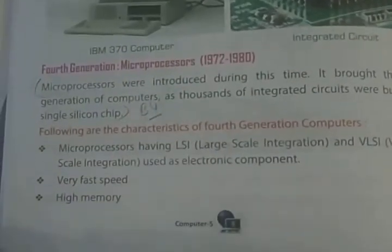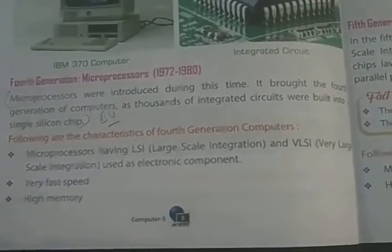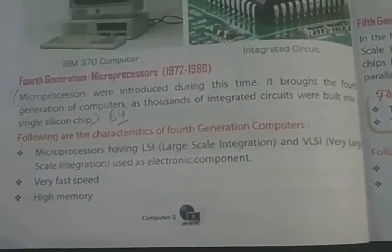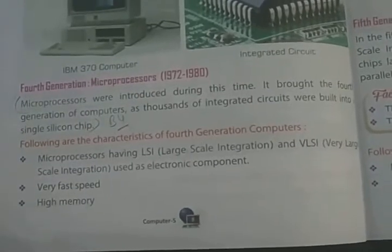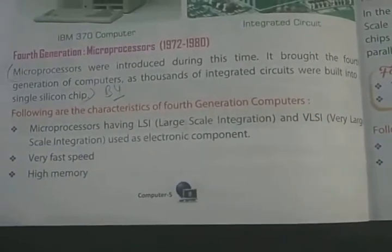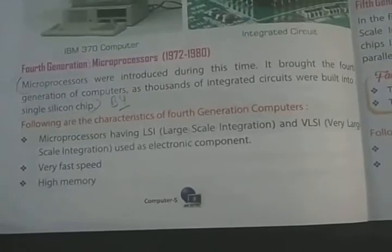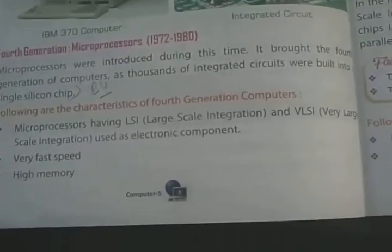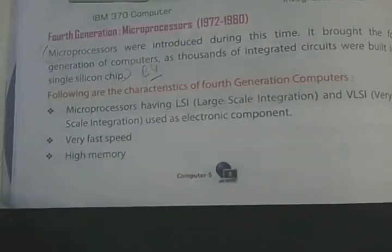Next come fourth generation computers, which used microprocessors, from 1972 to 1980. Microprocessors were introduced during this time, bringing the fourth generation of computers, as thousands of integrated circuits were built into a single silicon chip. Characteristics include microprocessors with LSI (Large Scale Integration) and VLSI (Very Large Scale Integration) used as electronic components. Speed was very fast.